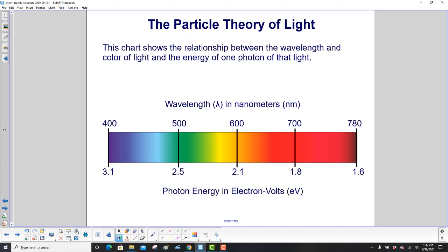The equation from the previous slide is illustrated in this chart. The chart shows the relationship between the wavelength, the color of light, and the energy of one photon of that light. So we have our wavelength on the top in nanometers. Nano is 10 to the minus 9. 700 nanometers, 780. And on the bottom, it shows you the energy of each photon in electron volts. So if you have a wavelength of 600 nanometers, that photon has an energy of 2.1 electron volts.